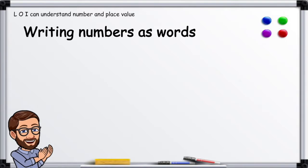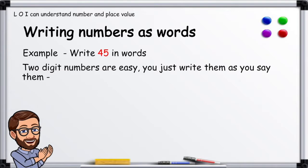Writing numbers as words. Example: Write 45 in words. Two digit numbers are easy. Just write them as you say them. 45.